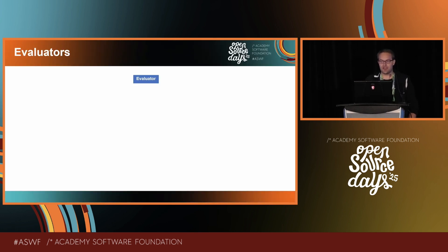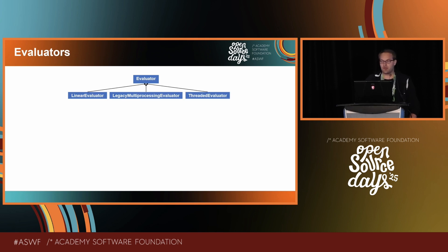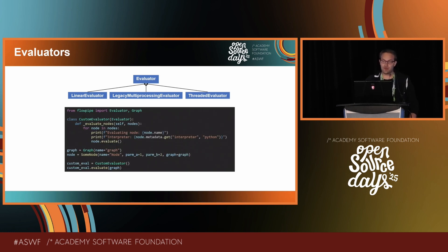Flowpipe uses evaluators to control the evaluation of a graph. For node graphs that need sequential, threaded, or multiprocessing evaluation, the graph's evaluation function can use any of the three provided evaluators. To gain more control, custom evaluators can be used. They are subclasses of the FlowpipeEvaluator class and implement the EvaluateNodes method, which handles the actual node evaluation. This example only prints the name of the node and its metadata, but using this information, node evaluation can be performed within interpreter-based subprocesses of the DCC's Python interpreters.